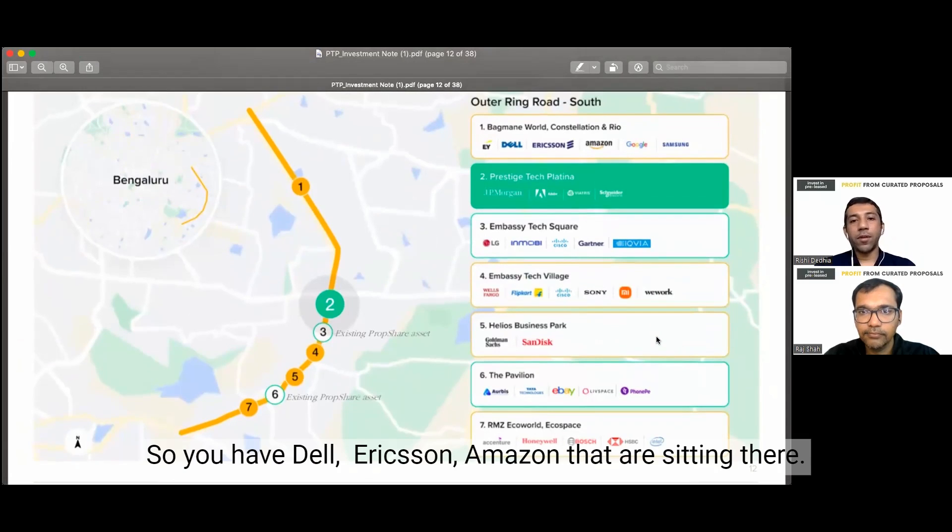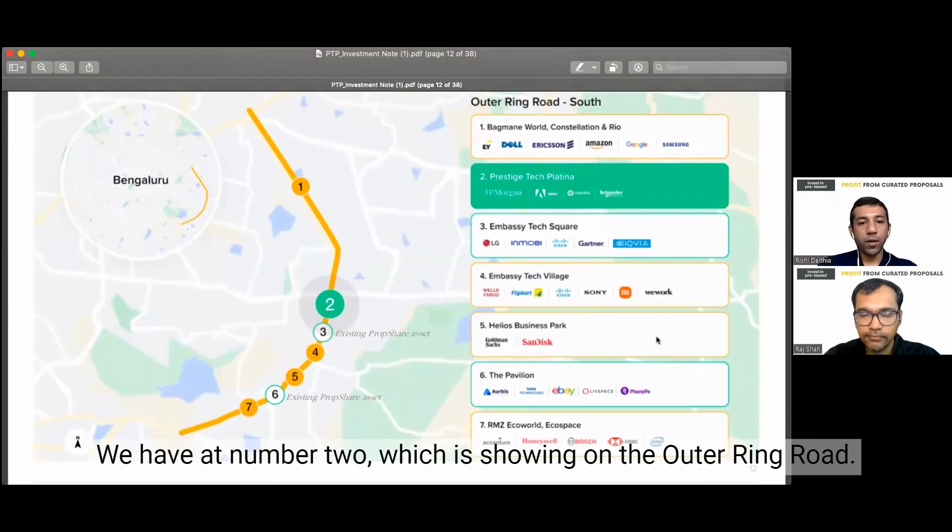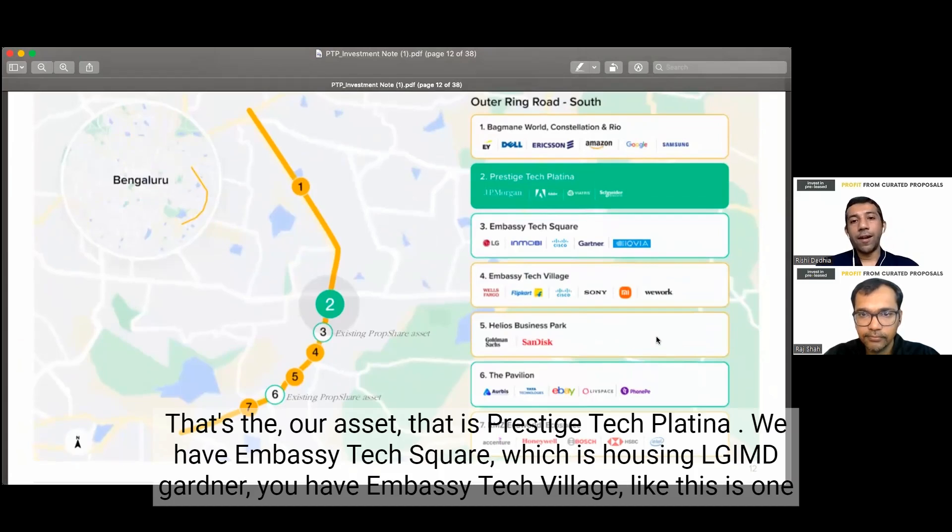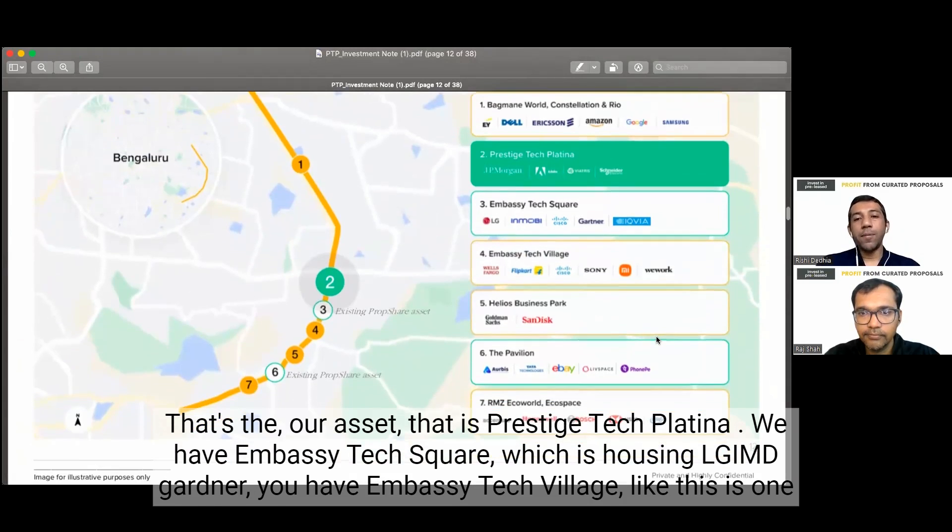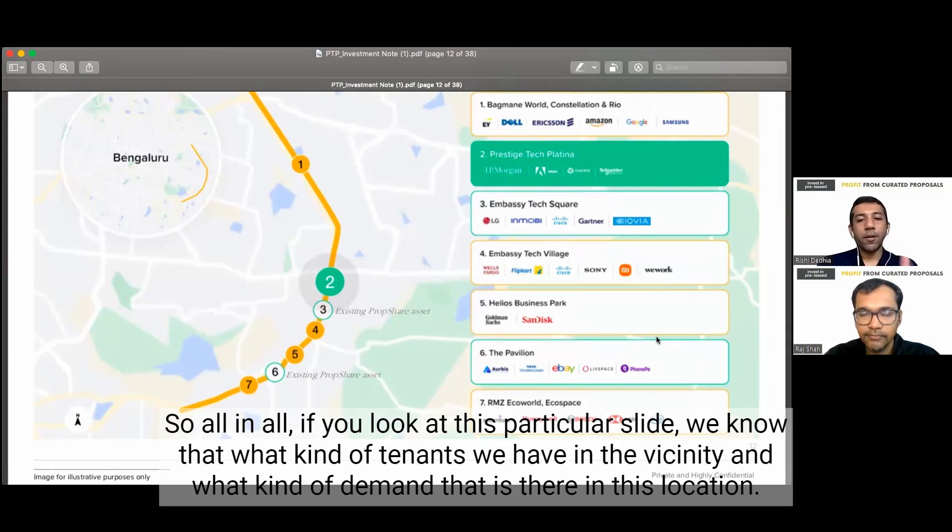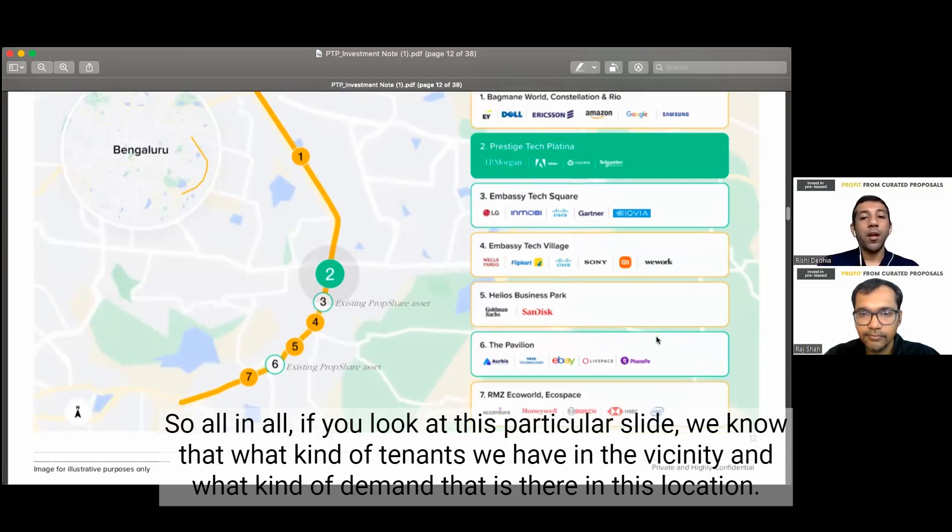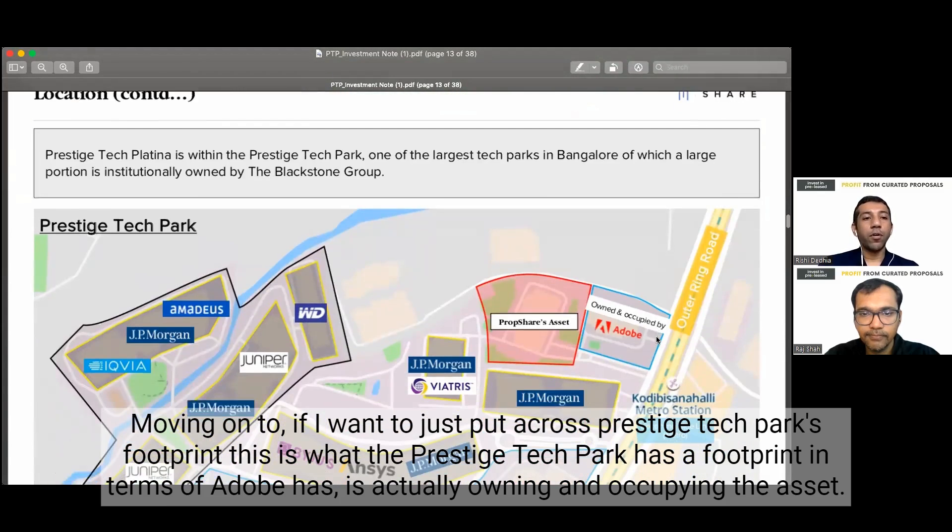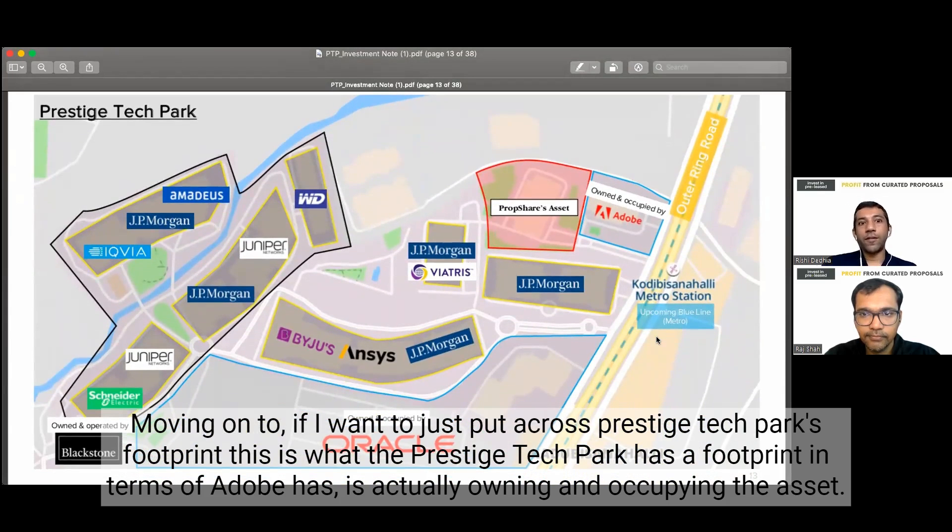Here we see outer ring road and I can show you what kind of tenants are currently there. So you have Dell, Ericsson, Amazon that are sitting there. We have at number two, which is showing on the outer ring road, that's our asset, that is Prestige Tech Platina. You have Embassy Tech Square, which is housing LG, AMD, Gartner. You have Embassy Tech Village. This is one of the most upcoming assets also where you have a lot of amazing tenants like Wells Fargo, Flipkart, Sony, Xiaomi. So all in all, if you look at this particular slide, we know what kind of tenants we have in the vicinity and what kind of demand is there in this location.